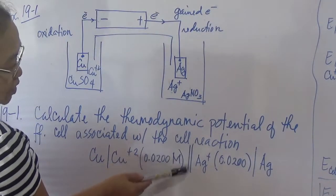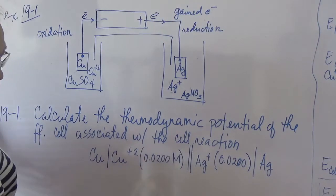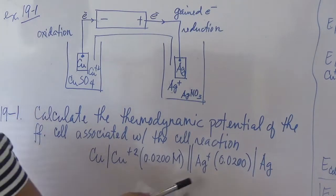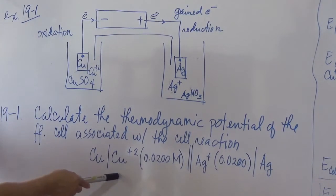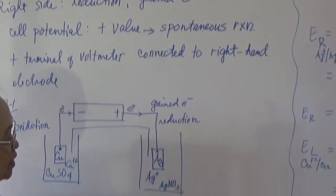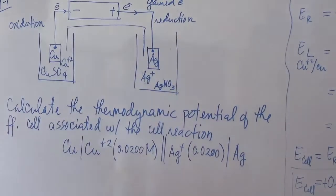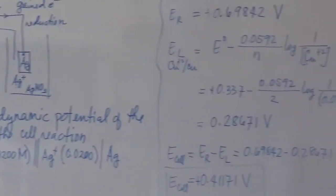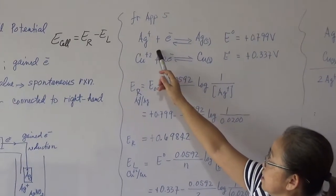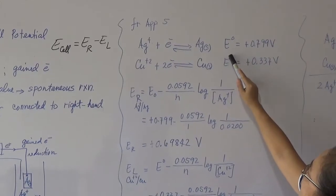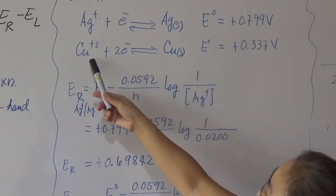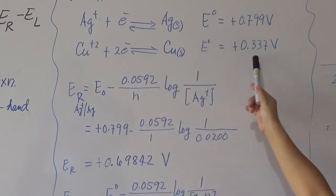The double bar in the shorthand expression indicates two compartments with a salt bridge. The silver electrode is on the right side and copper is on the left side. So the cell potential equals right side potential minus left side potential. There will be two half reactions: the reduction of the silver ion, with a standard electrode potential of positive 0.799 V, and the reduction of copper²⁺, which is 0.337 V. These values can be checked in Appendix 5.